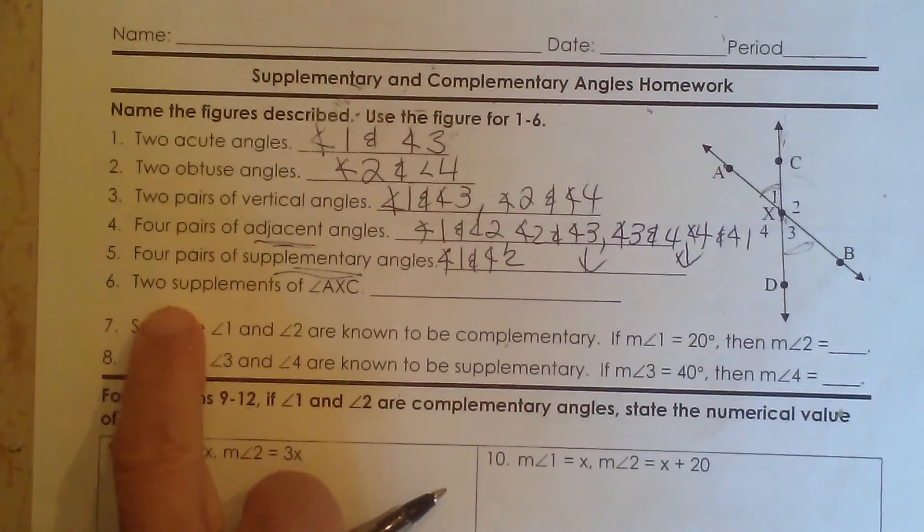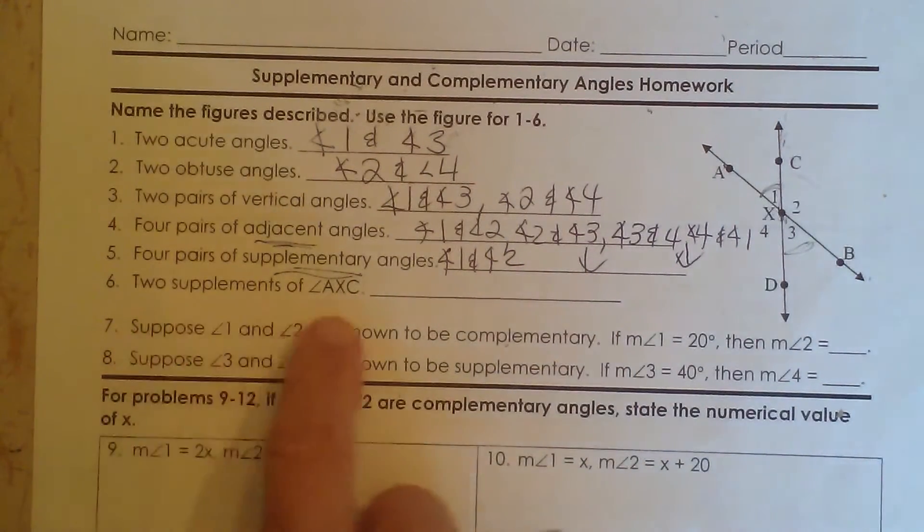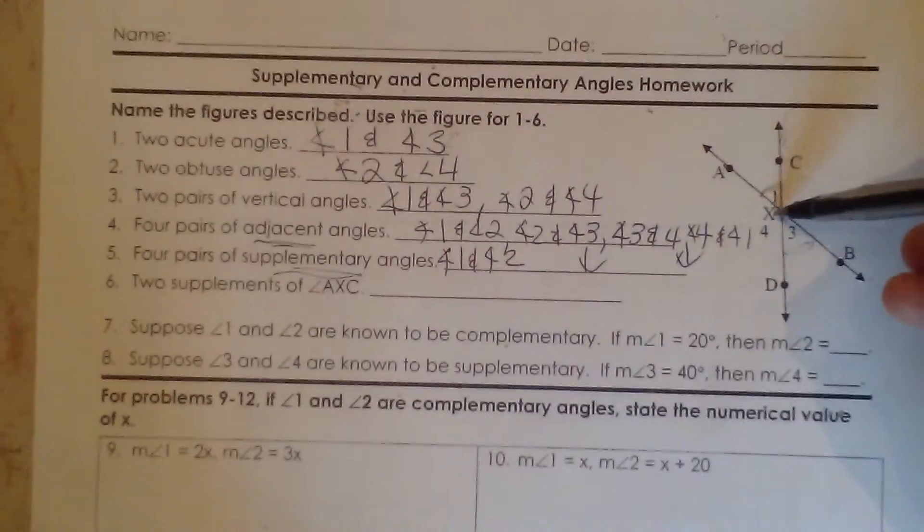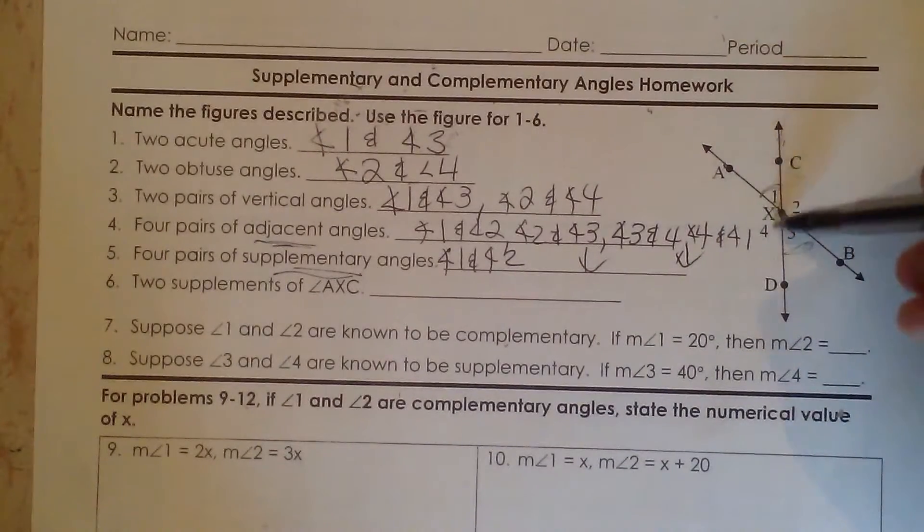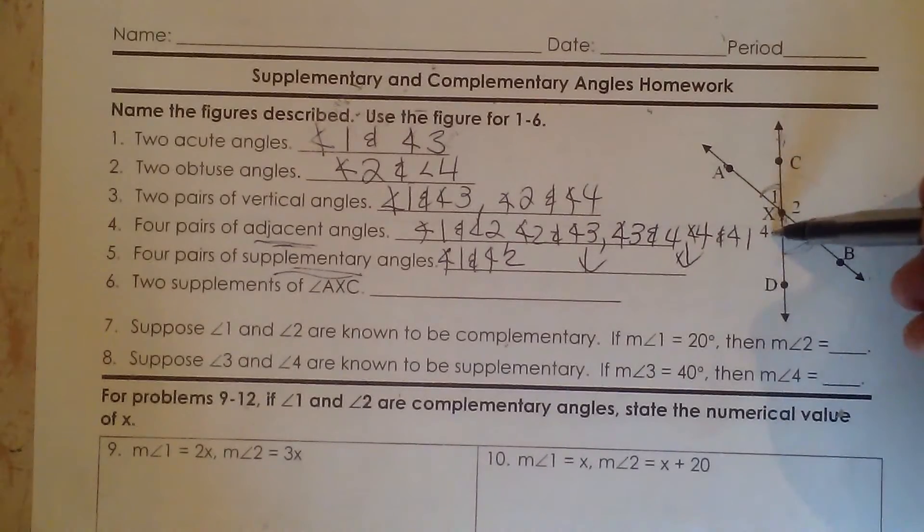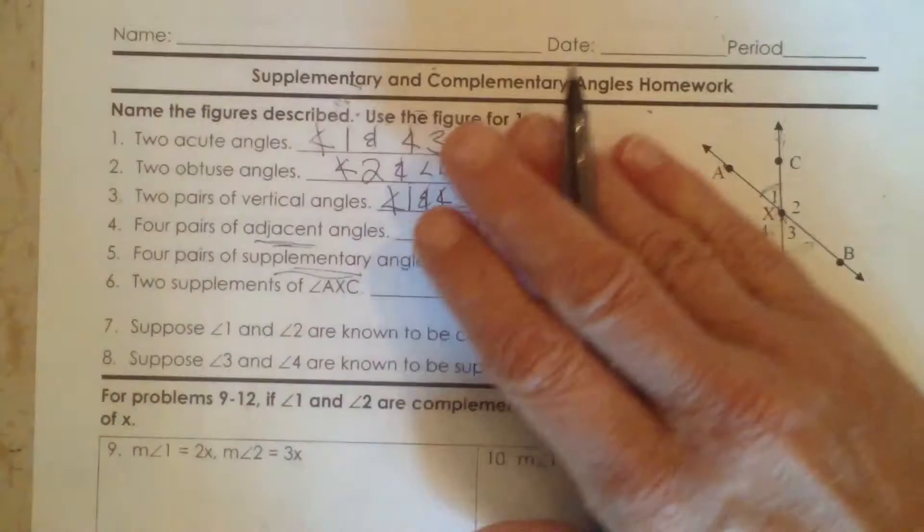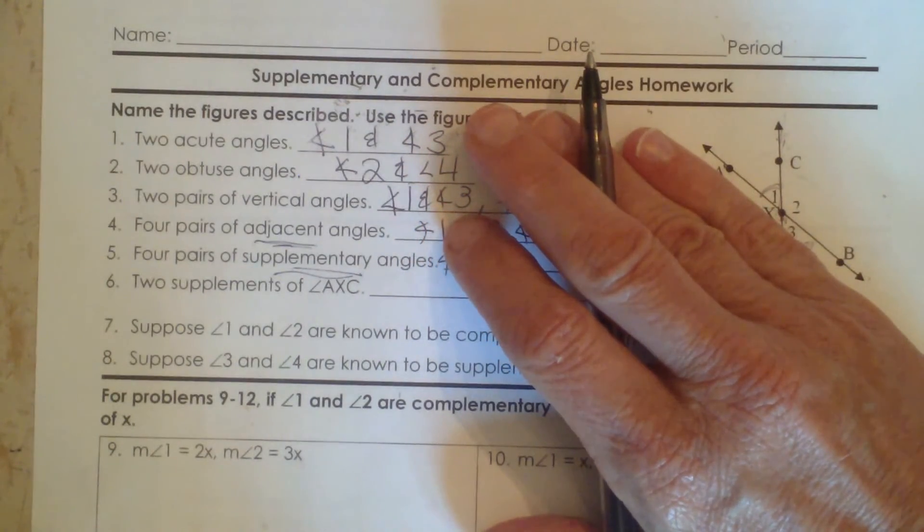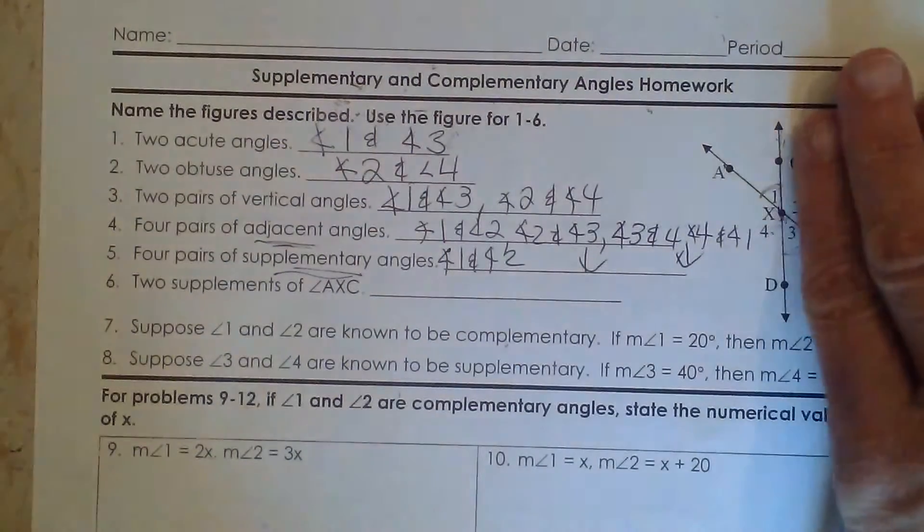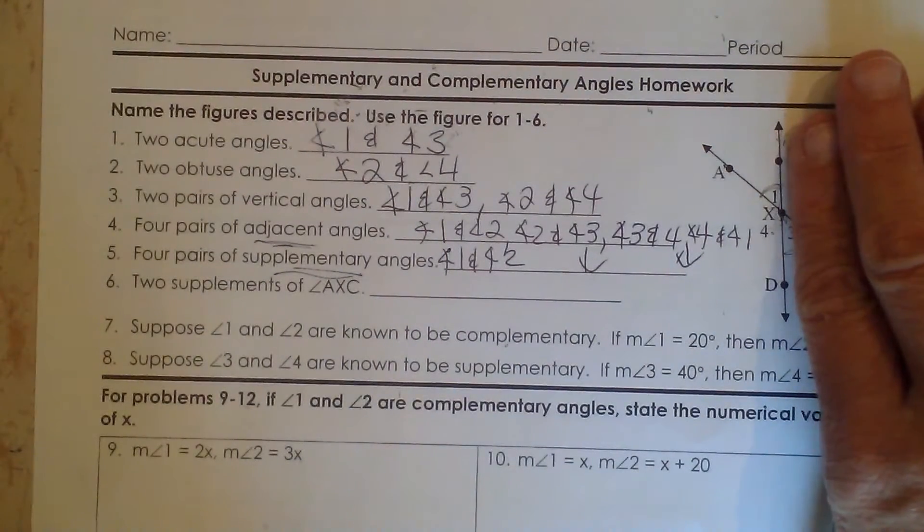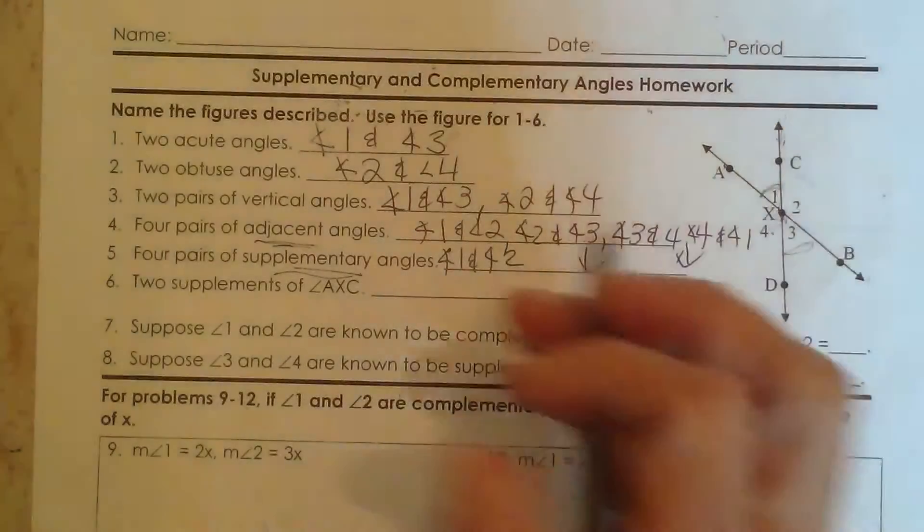Now let's look at two supplements of angle AXC. So AXC is this angle up here, angle 1. Which two are supplementary to angle 1? So we can look and say well, angle 2 is a supplement to angle 1 if I look this way, but then if I look this way, angle 4 is a supplement to angle 1. So you could say the two supplements to angle 1 are angle 2 and angle 4.